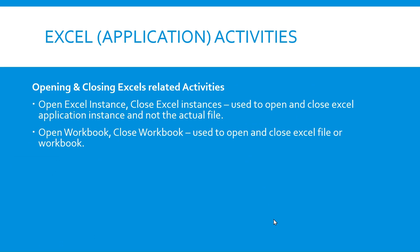In this video we are going to see how we can use Excel application activities to open and close Excel files. Excel application activities includes four activities: Open Excel Instance, Close Excel Instance, Open Workbook, and Close Workbook. Open Excel Instance and Close Excel Instance are the major and mandatory activities, but they don't actually open the actual Excel file — they only open an instance of MS Office Excel. To open an actual Excel file, we need to use Open Workbook and Close Workbook activities.